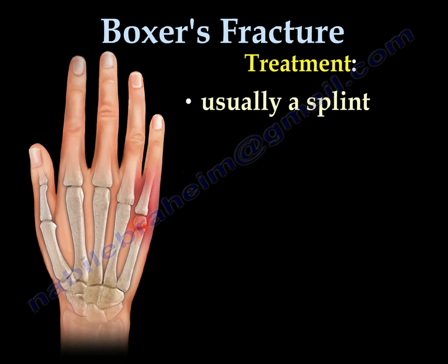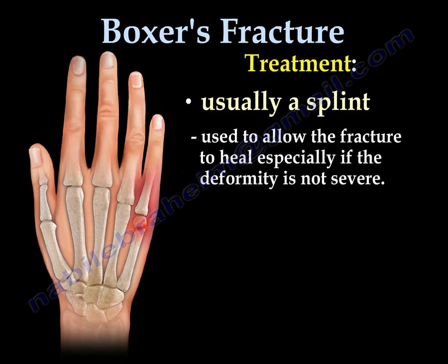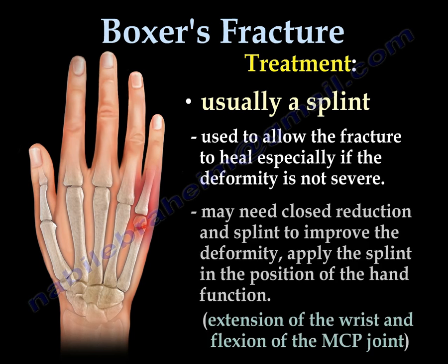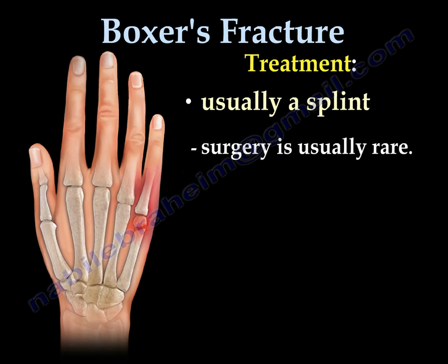Treatment: Usually a splint will allow the fracture to heal, especially if the deformity is not severe. You may need to do a closed reduction in the splint to improve the deformity. Put the splint in the position of hand function, which is extension of the wrist and flexion of the MCP joints. Surgery is usually rare.